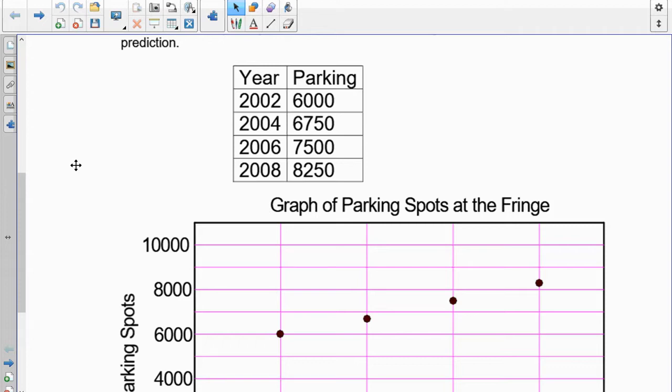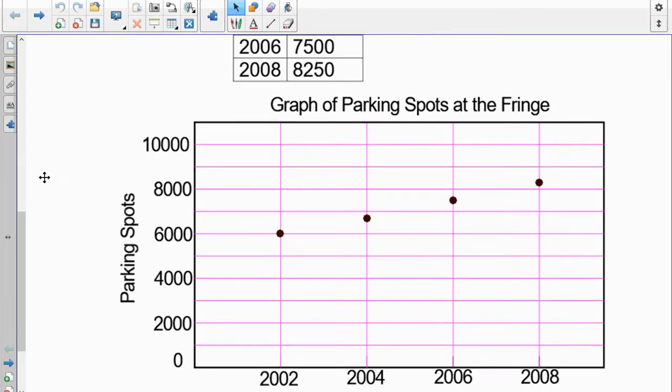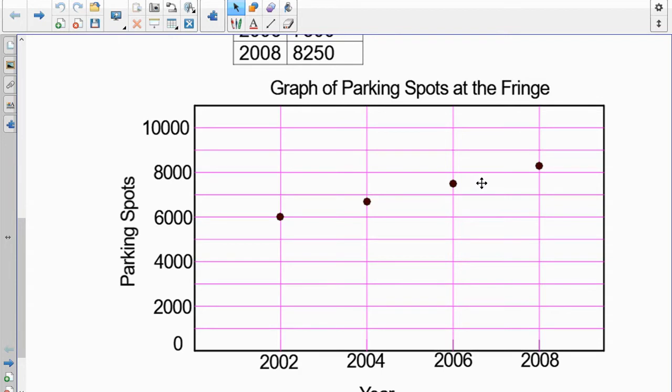And when they knew this, they could take it into consideration when they're designing their infrastructure. So here I made a graph. A graph of parking spots at the Fringe. And you can see it starts here for the four years.